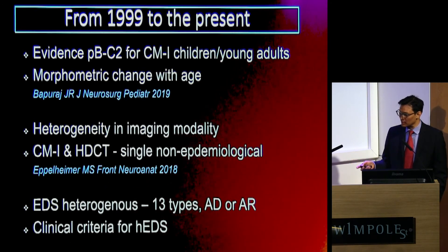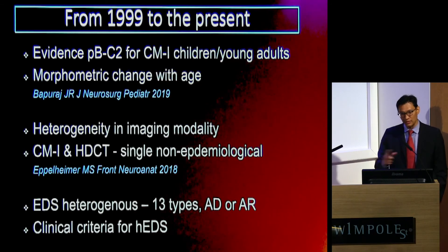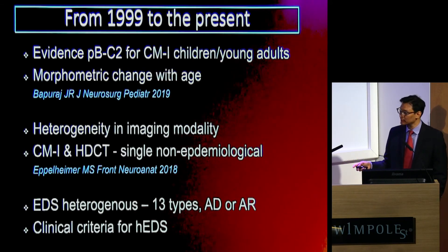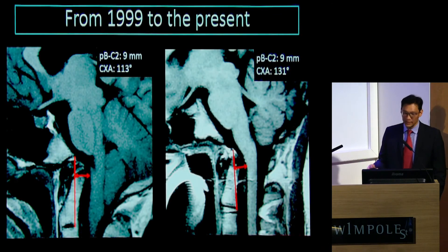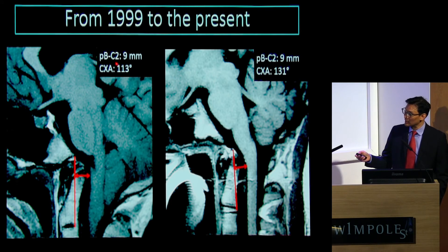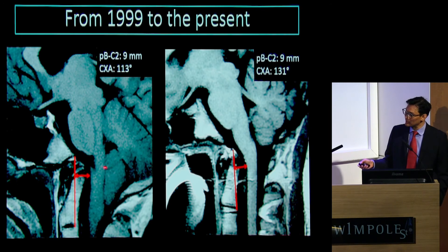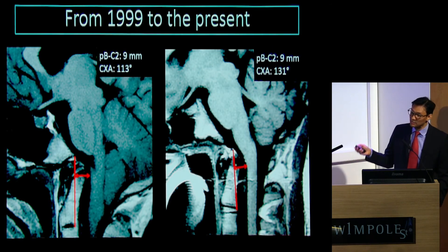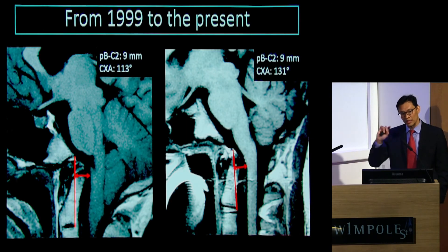That calls into question some of the clinical criteria used to make a diagnosis of hypermobile EDS. Are we in a situation where we've moved from this measurement for a specific entity in young patients — where you've got a Grabb-Oaks threshold of 9mm with clear impression on the ventral cervical medullary junction — to a situation where there is no clear impression but still applying a 9mm threshold and putting them in the same basket? We have to be slightly cautious.